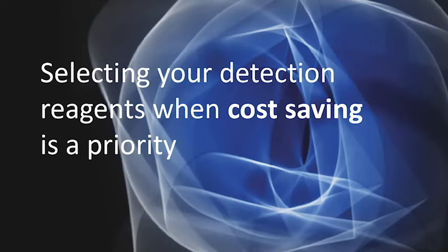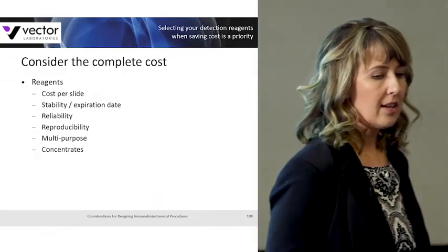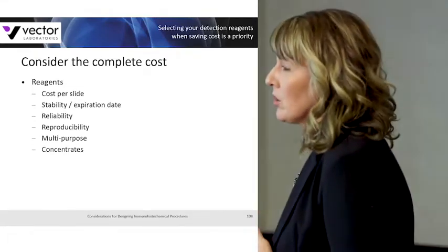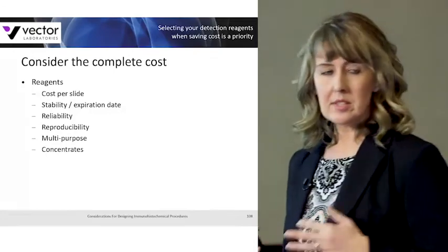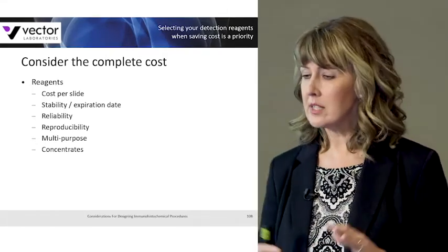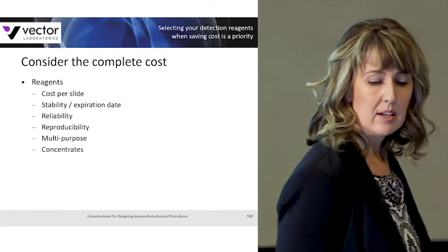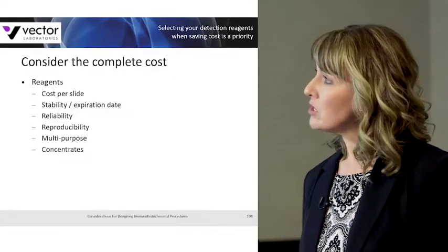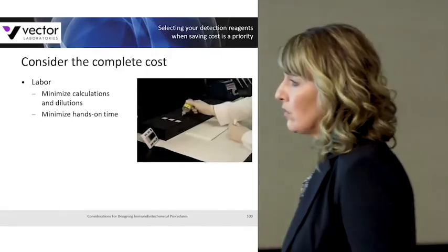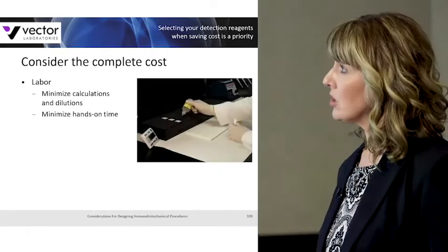Next, selecting detection reagents when cost savings is a priority. Consider the complete cost of your assay — not only reagent cost, but labor cost. The reagent cost is not just cost per slide; consider whether the reagent provides reliable, stable performance over its entire lifetime. You want a reagent that is reproducible across its entire lifetime. Choosing multipurpose reagents also provides cost savings; concentrates are often a good choice as ready-to-use reagents can be more expensive. Also consider labor costs — hands-on time translates into labor costs, so minimize calculations and dilutions where possible.